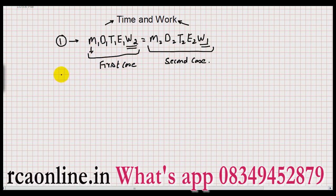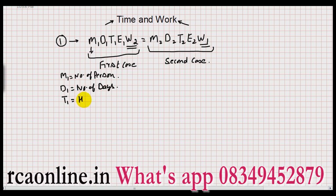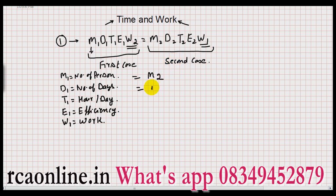M1 is the number of persons in the first case. D1 is the number of days. T1 is hours per day — how many hours worked per day. E1 is the efficiency of those people. W1 is the amount of work done. M2 is the number of persons in the second case. D2 is the number of days in the second case. T2 is hours per day in the second case. E2 is efficiency, and W2 is the work to be done. Let us discuss one question to understand this equation very clearly.